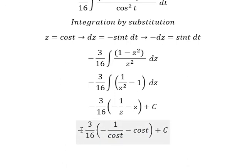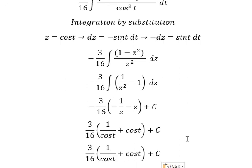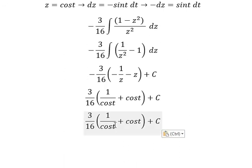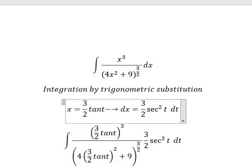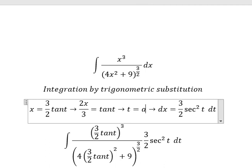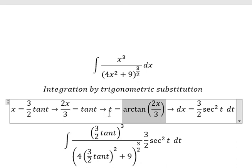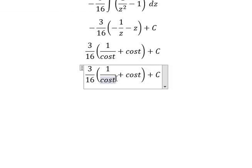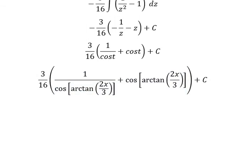We simplify the negative signs. For cos t, we need to back-substitute in terms of x. We divide both sides by 3 over 2, giving 2x over 3 equals tan t, so t equals arctan of 2x over 3. Substituting this back gives the final answer. This is the end — thank you for watching.